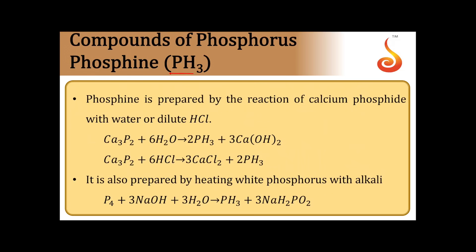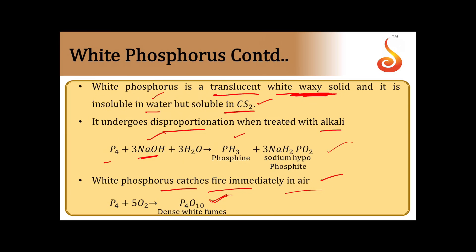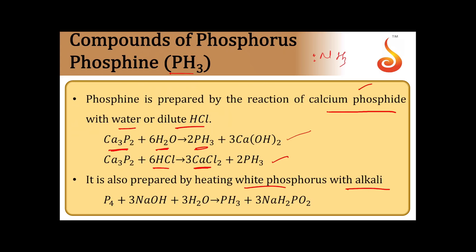Another compound of phosphorus is phosphine (PH3), which is analogous to ammonia and is the hydride of the 15th group element phosphorus. It can be prepared by the action of calcium phosphide (Ca3P2) with water or dilute HCl — giving phosphine gas and calcium hydroxide or calcium chloride as byproducts. It is also prepared by the action of white phosphorus with alkali (NaOH), which also produces PH3.